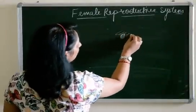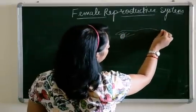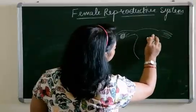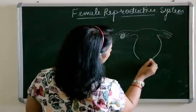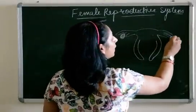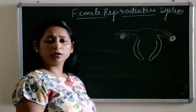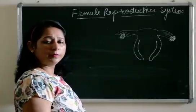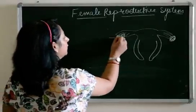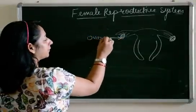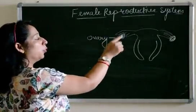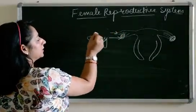I'll be drawing the diagram and simultaneously explaining. Now when we look at the female reproductive system, I'll make a diagram first so that it's easier to understand. The outermost or main part of the female reproductive system, which is responsible for the process of reproduction, is the ovary. I will be labeling it first so that it becomes easy for you.